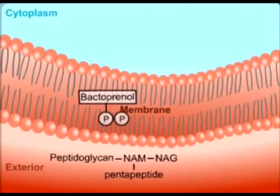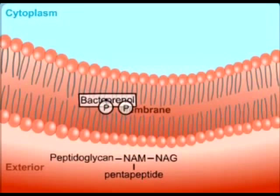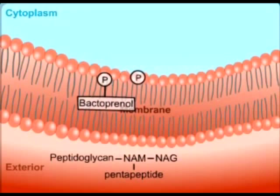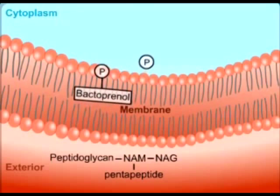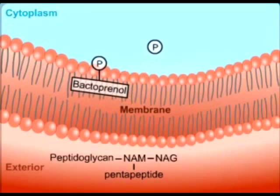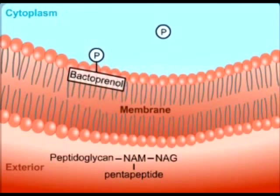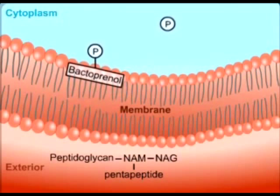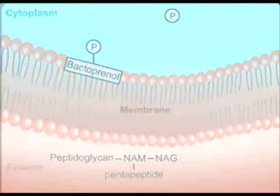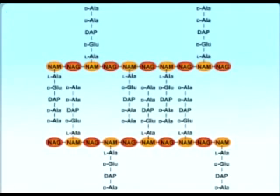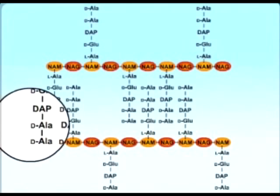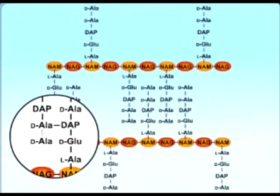As the bactoprenol pyrophosphate returns to the inside of the cell membrane, one phosphate is removed by a pyrophosphatase, leaving a bactoprenol phosphate to accept another NAM pentapeptide. Finally, the peptide side chains are linked together by transpeptidation reactions, forming peptide bonds.